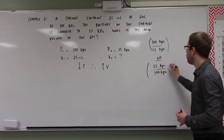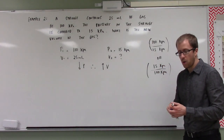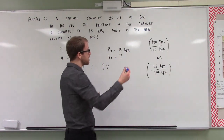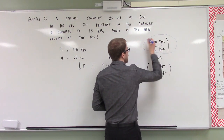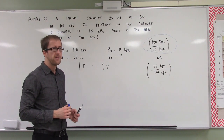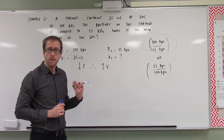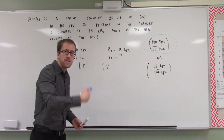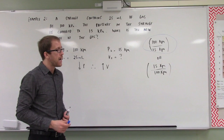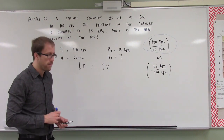Clearly we are going to be multiplying by the thing that increases our volume, which is 100 over 15. If you do the math, 100 divided by 15 gives you 6.666 continuing. So this makes sense — we decreased our pressure by 6.666 continuing times, and as a result we are going to increase our volume by the same amount.